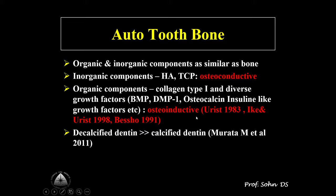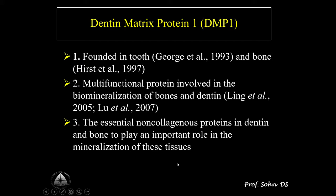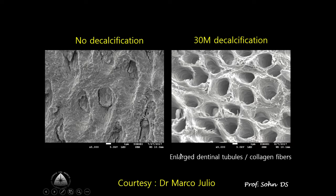Decalcified dentin induced faster new bone formation than decalcified bone. We can make three types of tooth bone from extracted patient teeth — particulate or block bone, or ring tooth block bone. DMP, dentin matrix protein 1, is found in both tooth and bone and is known as a multi-functional protein involved in the biomineralization of bones and dentin, according to Ling and Lu's study.